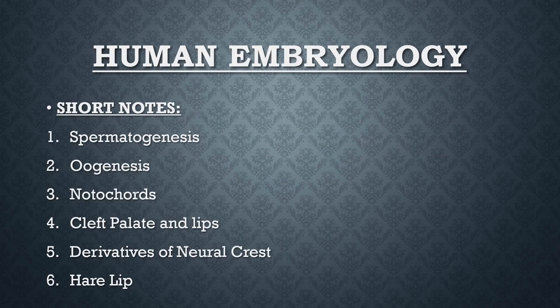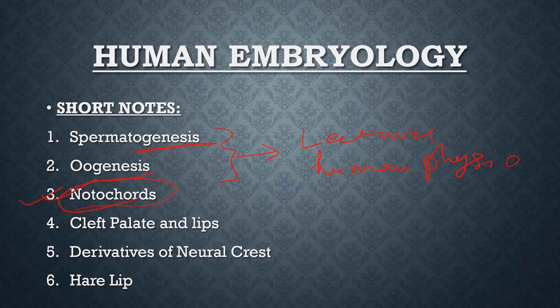Firstly, let us summarize the short notes of human embryology which includes spermatogenesis and oogenesis, which I have already mentioned in the lectures of human physiology. Next we have short notes on notochords — a most frequently asked question — cleft palate and cleft lips, derivatives of neural crest, and lastly the hair lip.